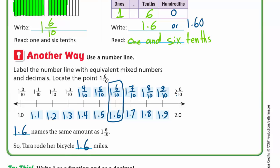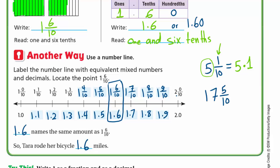So Tara rode her bicycle 1.6 miles. It's really easy: if we have a whole number, we write it to the left of the decimal point and the fraction to the right. For example, 5 and 1 tenth is written as 5.1. If we have 17 and 5 tenths, we write the decimal point, put 17 to the left as the whole number, and write 5 to the right.